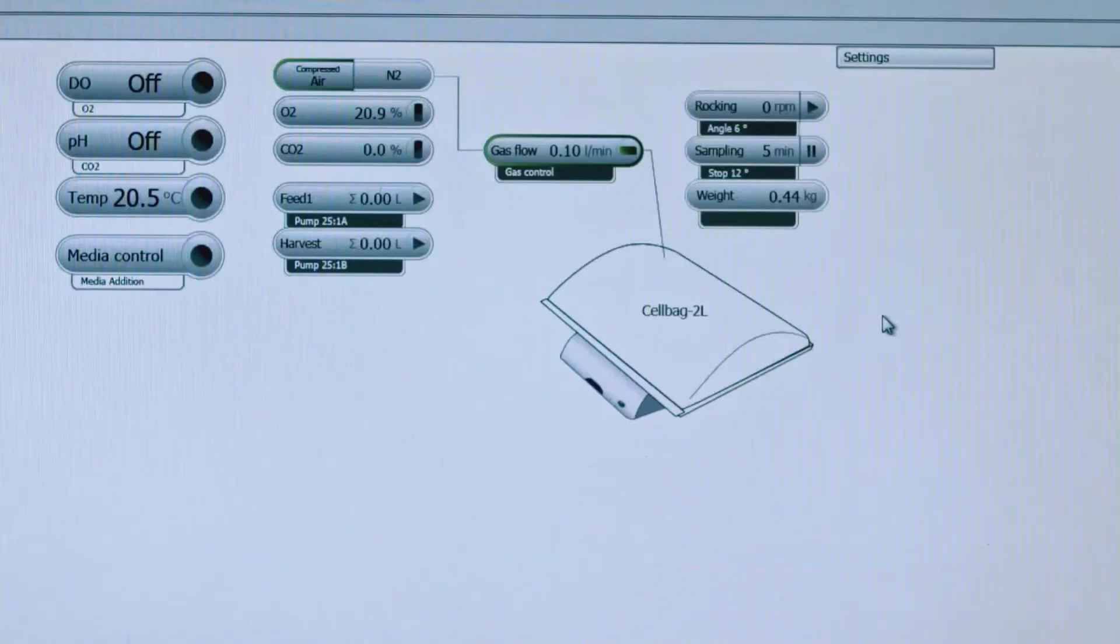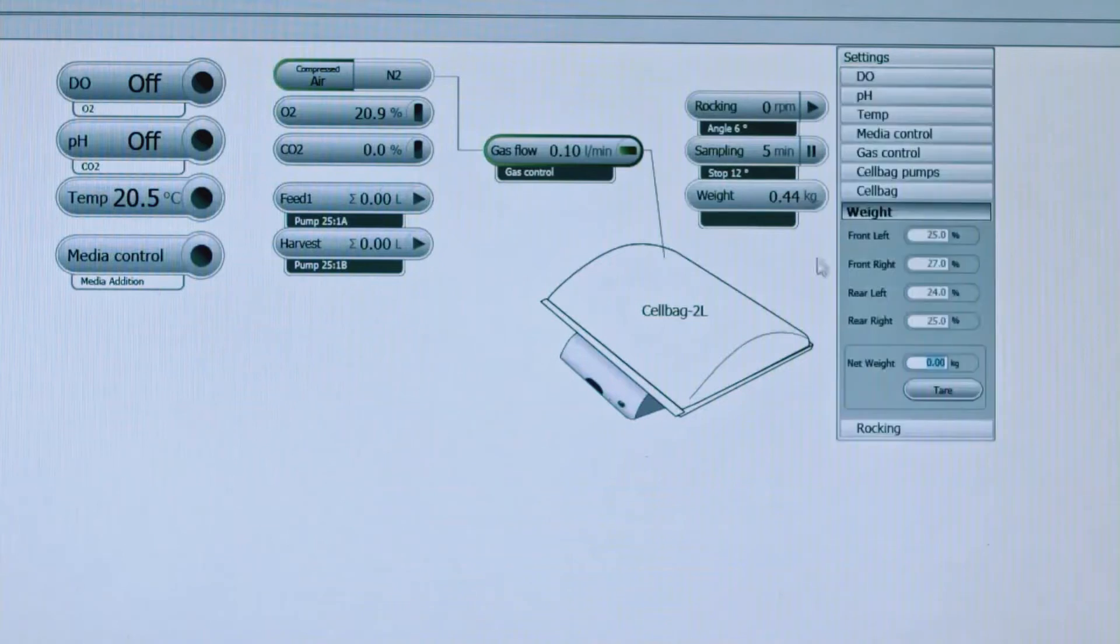Before adding any media to the bag, you'll click on the weight button and tare the weight so the net weight equals zero. Once that shows zero here, you can click media control.